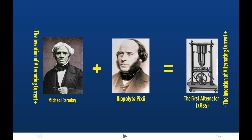A direct current produced by batteries is very simple. It starts off from the negative polarity, goes to the circuit, and goes to the positive polarity — it's a simple loop. Alternating current, because it's created by a revolving magnet with a north and south pole, creates positive and negative charges as it spins that alternate back and forth. So while direct current goes around in one single loop, alternating current, in effect, goes back and forth in cycles known as Hertz.